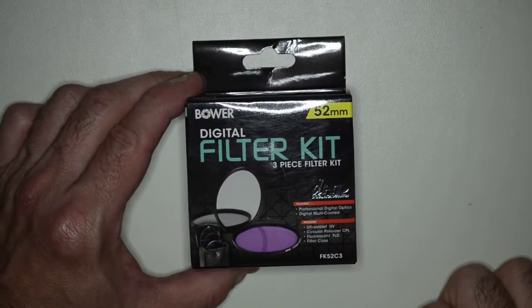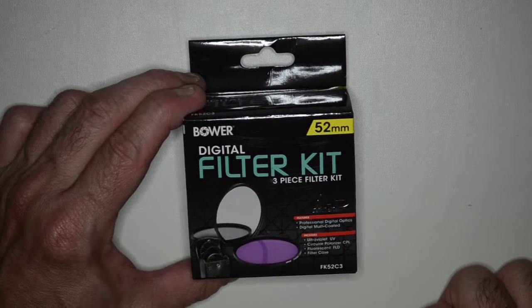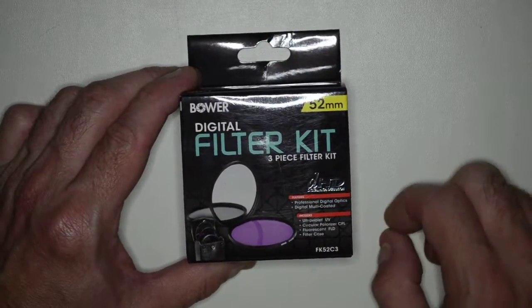This is the unboxing of the Bauer Digital Filter Kit. It comes with a UV filter, fluorescent filter, polarizing filter, and it comes with a case.